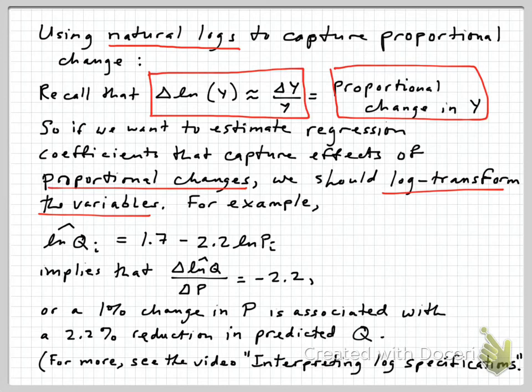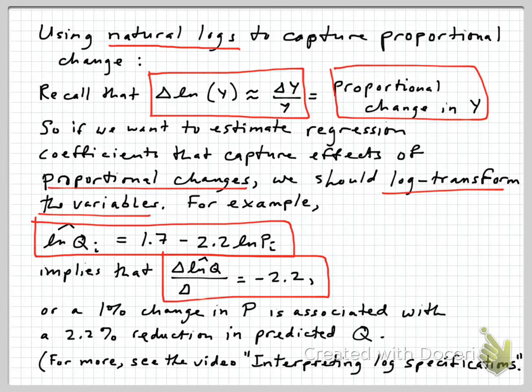So if you want to estimate a regression that has coefficients that will capture the effects of proportional changes in the variables, the best thing to do is to log transform those variables first. So for example, suppose you ran this regression where we estimate the relationship between the natural log of a quantity variable and the natural log of a price variable, and we find that the estimated equation is the predicted natural log of the quantity is equal to 1.7 minus 2.2 times the natural log of the price. Well, this implies that the slope there of negative 2.2 is the rise over the run, so the change in the log of q for a change in the log of price is negative 2.2, or to interpret this in proportional changes, a 1% change in price is associated with a 2.2% reduction in the predicted quantity, and that's of course what we would call an elasticity.